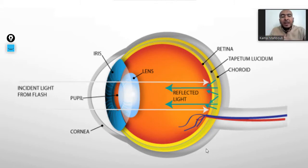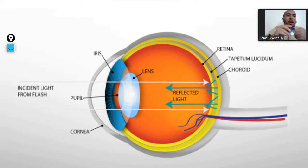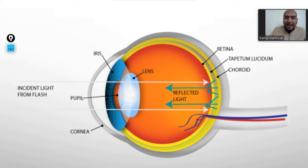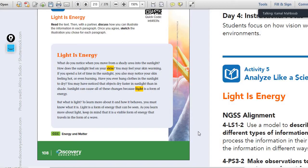In the retina, animals have a material that reflects light, like glass or like a mirror. So at the back of the retina there is something like a mirror that bounces the light back — that is why their eyes glow at night.